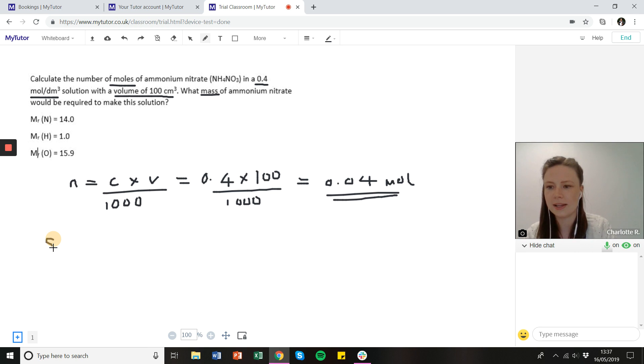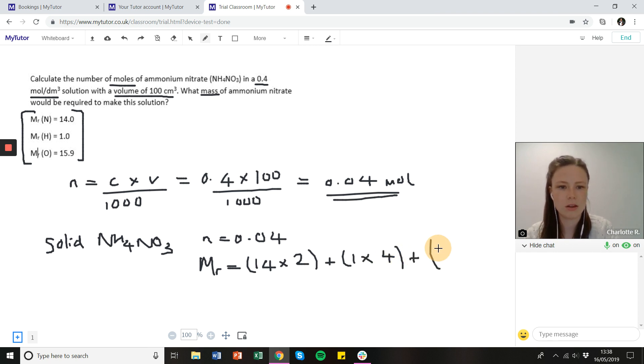So if we're thinking about the solid NH4NO3, we can still use that number of moles and they've actually quite helpfully given us some atomic weights up here. So we actually know a formula mass as well which is just going to be 14 times by 2 because there are 2 nitrogens, 1 times by 4 because there are 4 hydrogens, and then 15.9, that looks like 16 sorry, 15.9 times by 3 which is your oxygen. So I've just taken each of the atomic weights, multiplied it by the number of times it appears in that formula and then added them all together. And that Mr comes to 79.7.